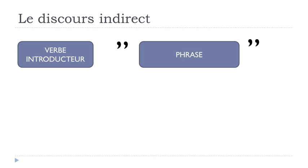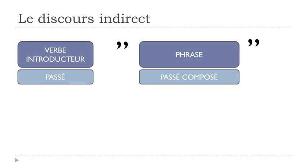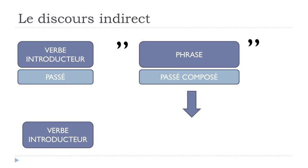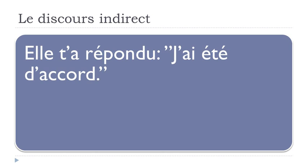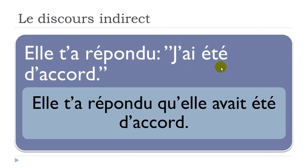Now: if we have the passé composé in the second part with the past introducing verb. Elle t'a répondu j'ai été d'accord — j'ai été is passé composé. This passé composé form will become plus-que-parfait. Result: elle t'a répondu qu'elle avait été d'accord. The first part doesn't change; the second part goes from passé composé to plus-que-parfait.